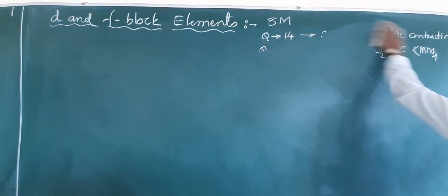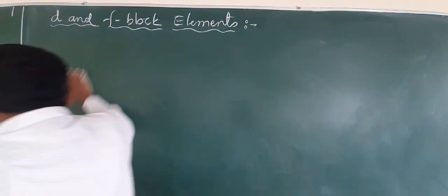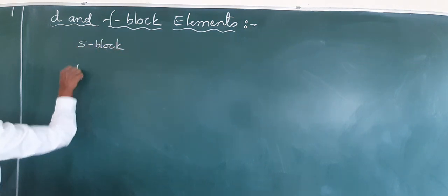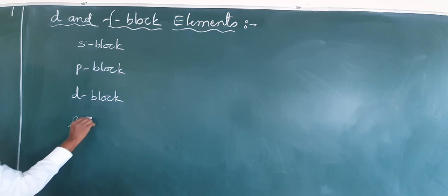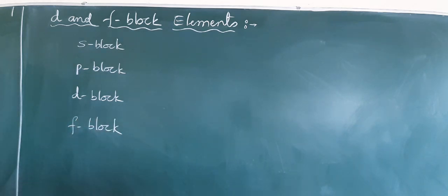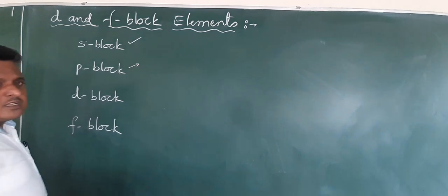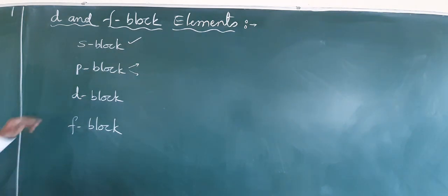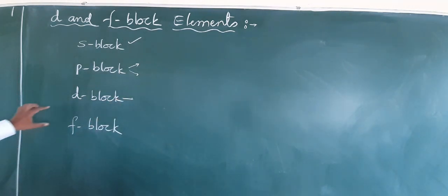Let us begin very simply. As we know from PUC first year, the periodic table consists of 4 blocks. The elements are divided into 4 categories: S, P, D, and F. In PUC first year we studied S block and part of P block. In PUC second year we have the remaining groups — groups 15, 16, 17, and 18 — and today our target is the D as well as F block.